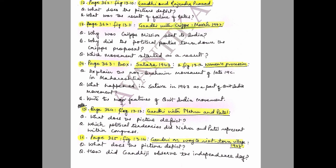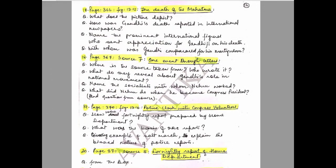Question 15: Page 364, Figure 13.13 — Gandhi with Nehru and Patel. Questions: What does the picture depict? Which political tendencies did Nehru and Patel represent within Congress? Question 16: Page 365, Figure 13.14 — Gandhi on way to riot-torn village 1947. Questions: What does the picture depict? How did Gandhiji observe Independence Day?